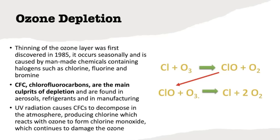If you look at the chemical formula on the right side of the screen, this shows the reaction that chlorofluorocarbons cause that leads to ozone depletion. UV radiation from the sun causes CFCs to decompose, and that decomposition releases chlorine, which then reacts with ozone, or O3, and forms chlorine monoxide, or ClO. That chlorine monoxide continues causing damage in the atmosphere because it reacts with other ozone molecules, breaking them down — what we're left with is Cl plus two oxygen molecules. Those oxygen molecules are not ozone, and ozone is what we need to protect us from UV radiation.